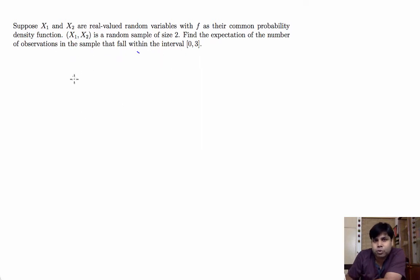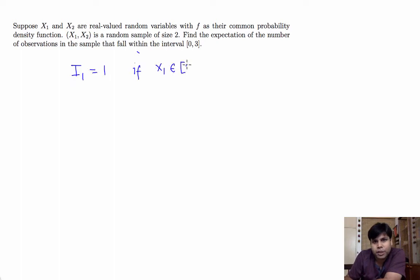In order to do so, we will define indicator random variables in the following way. Let i1 equal 1 if x1 belongs to the interval 0 to 3, and 0 if that is not the case.